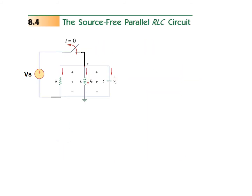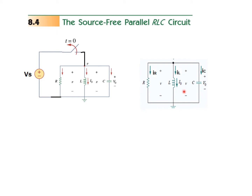Let's revise the concept of source-free. If you have a parallel RLC circuit connected with a source before t equals zero, the capacitor and inductor will get charged by the source. At t equals zero, we disconnect the source, so what is left is the circuit — this is the source-free circuit. Current flow will now continue because of the charges stored in the capacitor and inductor.